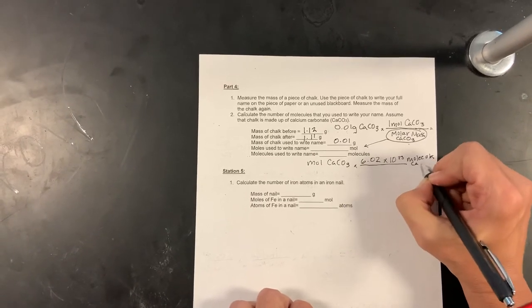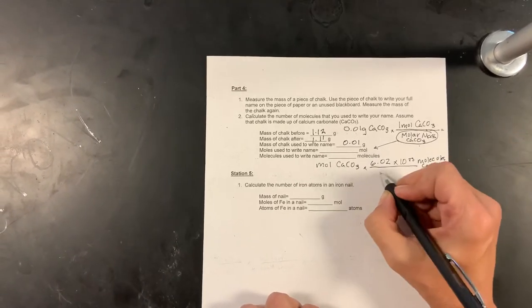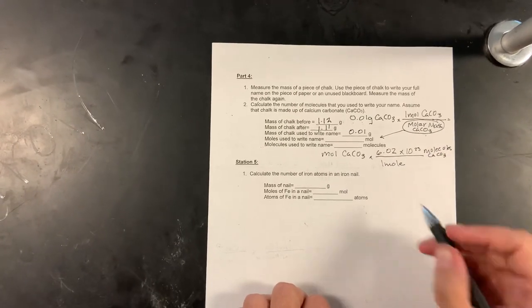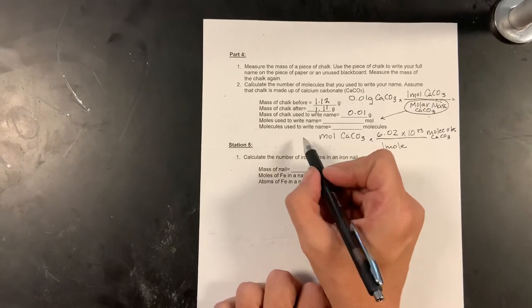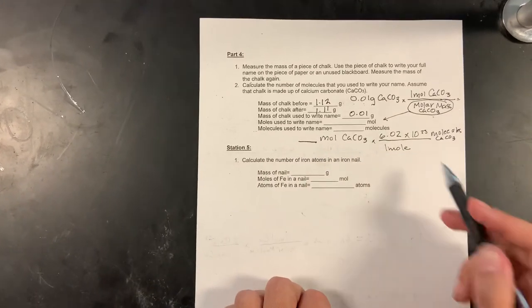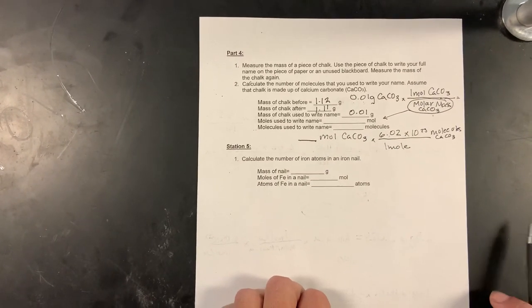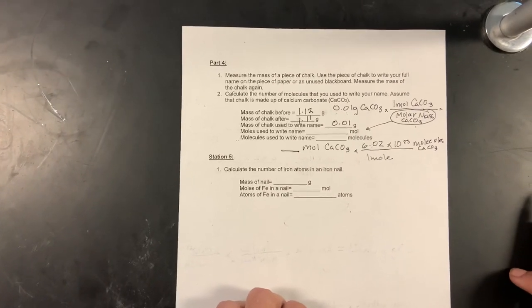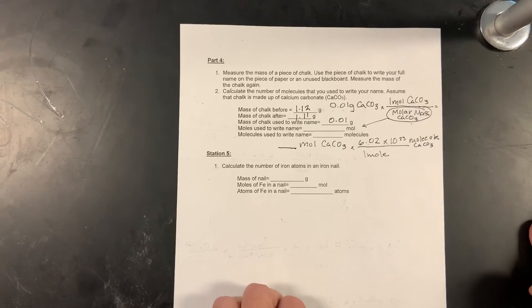Of calcium carbonate is equal to a mole, and so I'm going to go ahead and multiply my answer from the moles question by Avogadro's number, and that will give me the answer for how many molecules is in Miss Sparrow's fabulously bougie chalk written name.